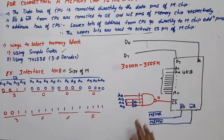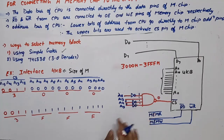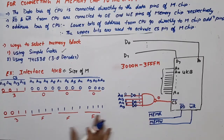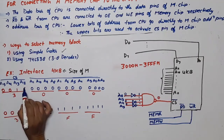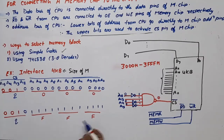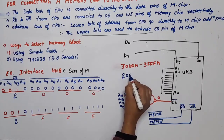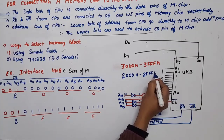Now, if we change the connection slightly — suppose A12 is now connected through a NOT gate instead — the input to the NOT gate should be 0 to get output 1. So A12's value changes from 1 to 0. The upper bits become A15=0, A14=0, A13=1, A12=0, giving value 2. The address range then becomes 2000H to 2FFFH.